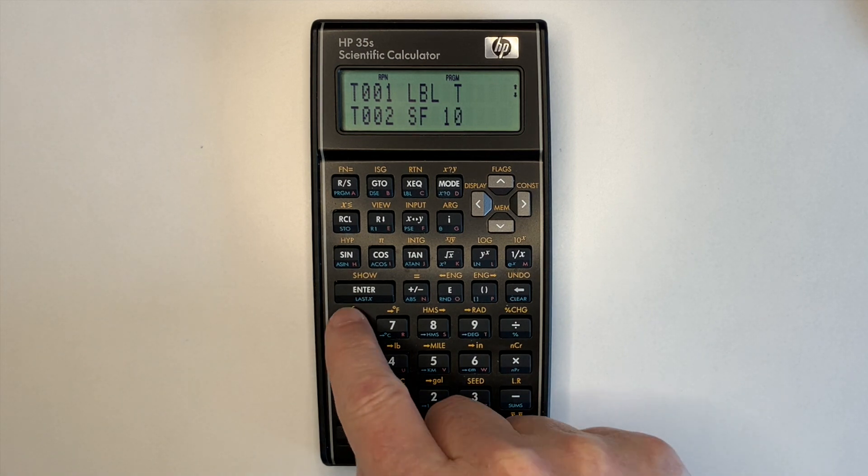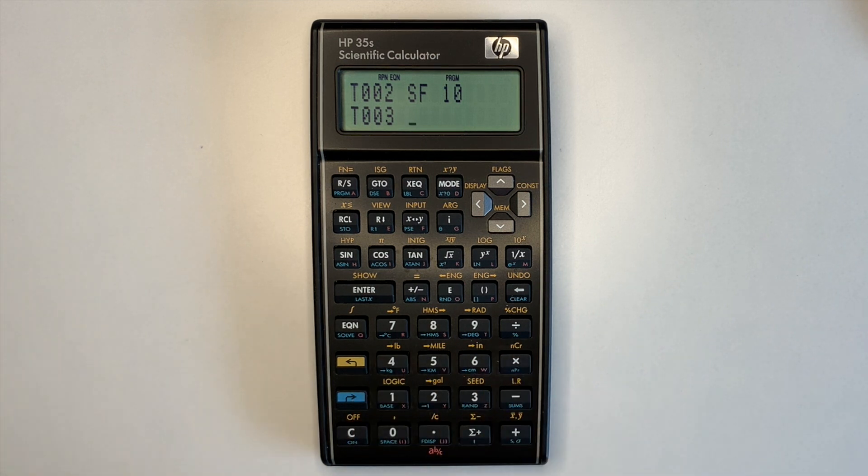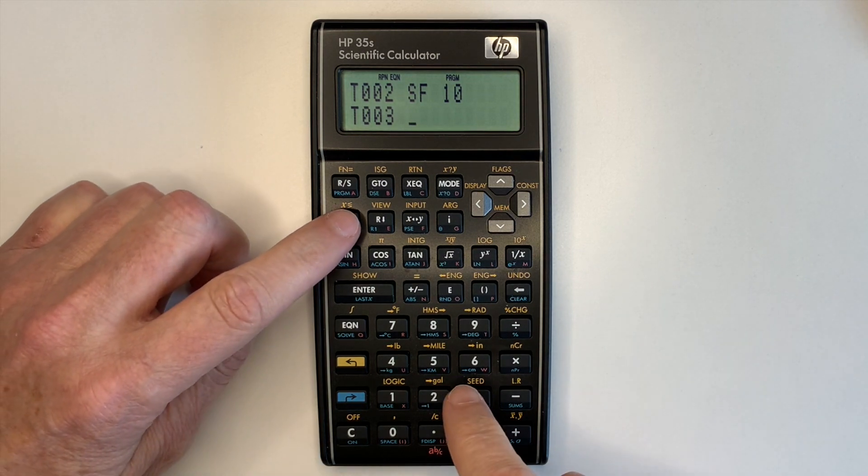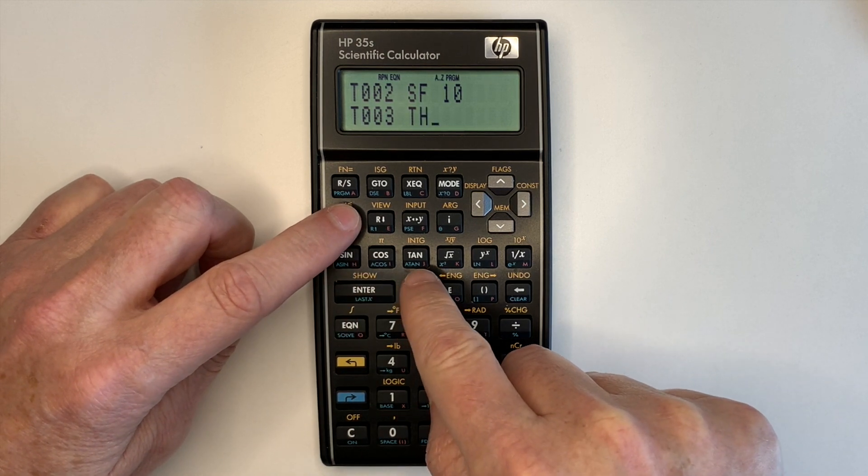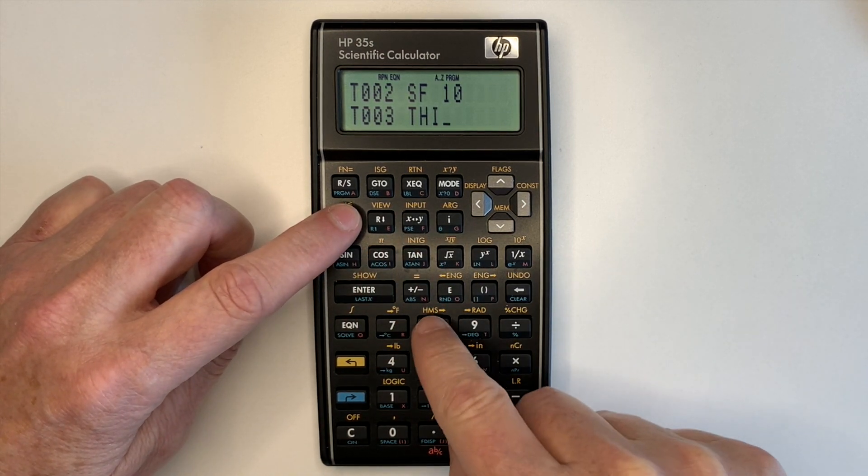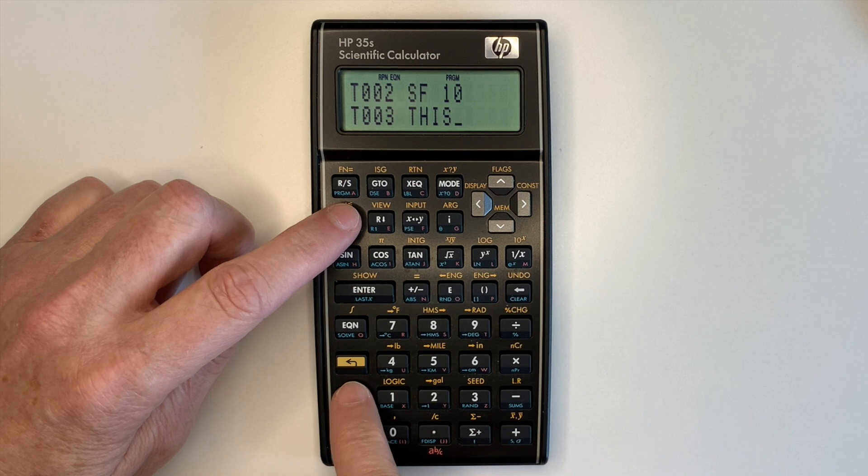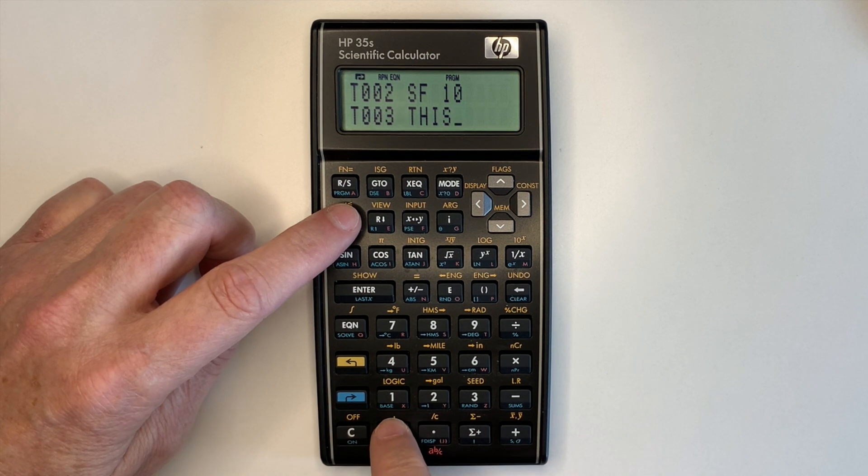And then we go into equation mode and then to get access to the red alpha keys, you have to prefix each key with recall. So we can go recall T, recall H and so on. Space is blue shift space.